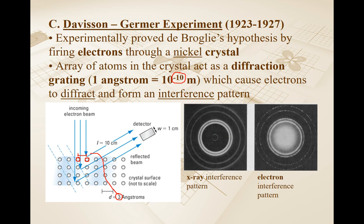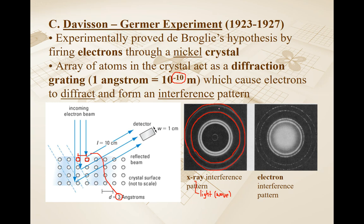Let's draw a comparison between the interference pattern for an X-ray versus an electron. An X-ray is a form of light — invisible light — and it's a wave. The bright spots in the X-ray pattern would be areas of constructive interference, and the dark spots would be destructive interference. If you fire electrons through the nickel crystal, you can also get an interference pattern — it just looks a little different.